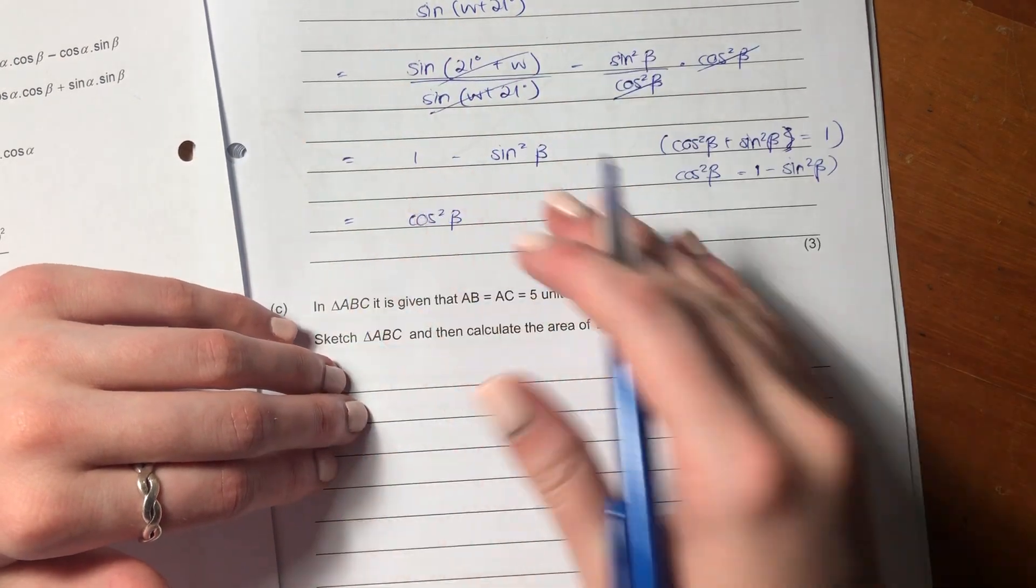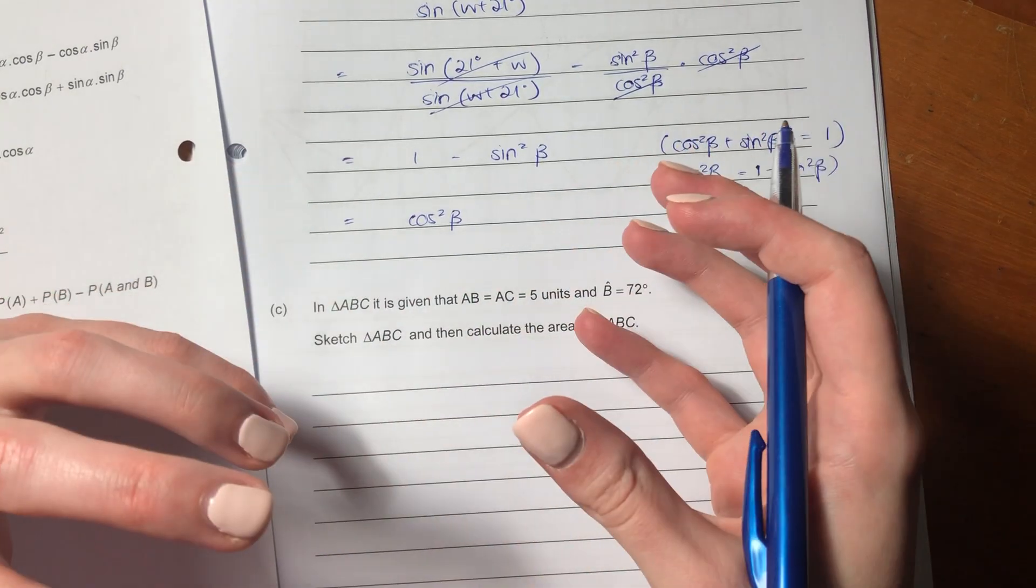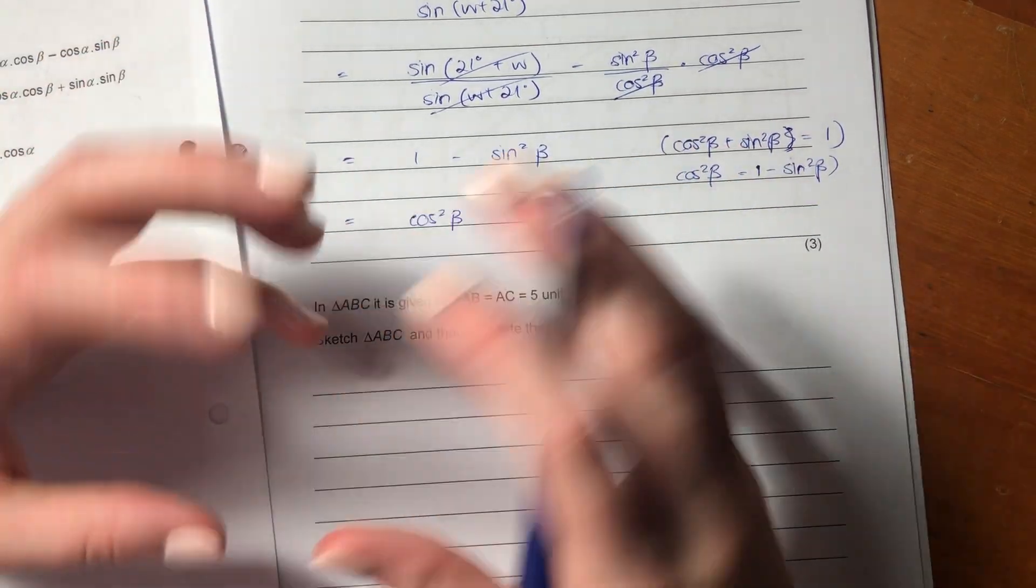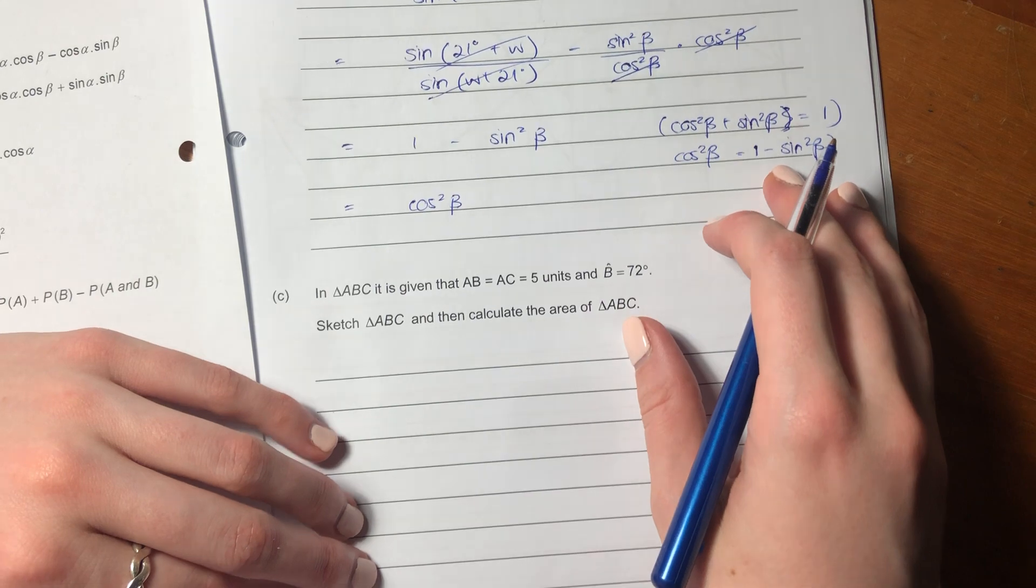So a lot of what they were asking you to do here was to leverage both the formula sheet and also your understanding of basic trig relationships. So the answer here is cos squared beta.